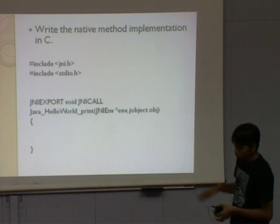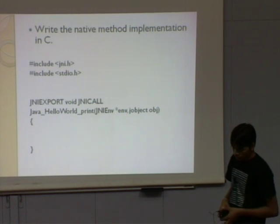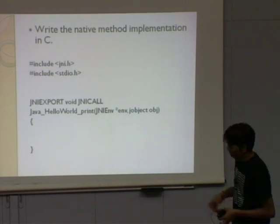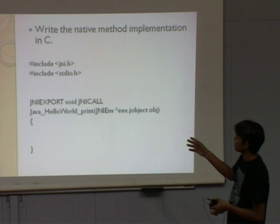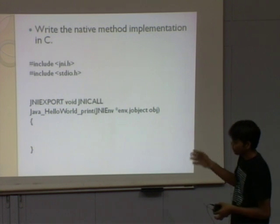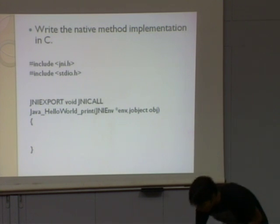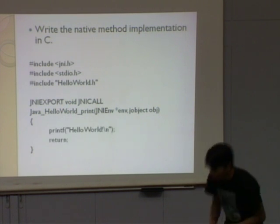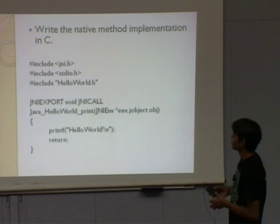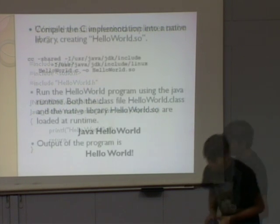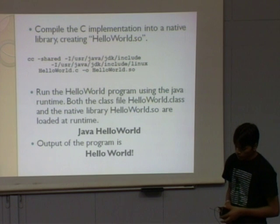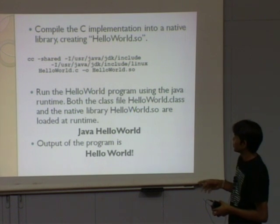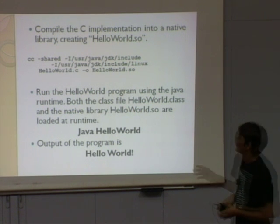Now we have to implement the print method in C. The implementation includes HelloWorld.h, calls printHelloWorld, and returns. Then we compile the C implementation.